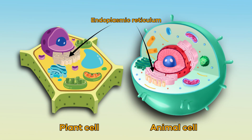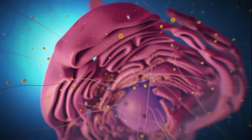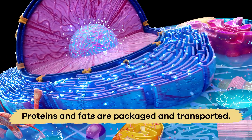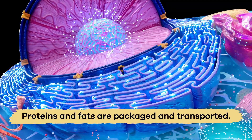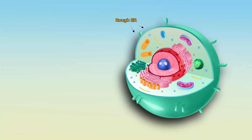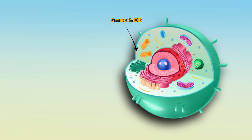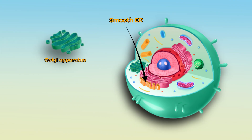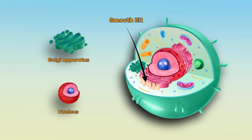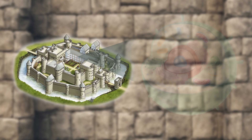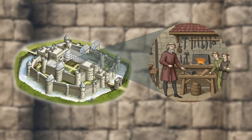The endoplasmic reticulum, or ER, is a collection of tubes. Inside the tubes, proteins and fats are packed and transported. The rough ER works with the ribosomes, and the smooth ER works with the Golgi apparatus and nucleus to help a cell function properly. Think of it like an intricate network of hallways and workshops running throughout a castle.